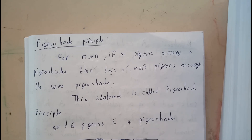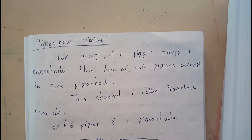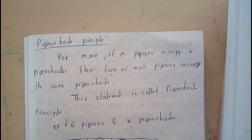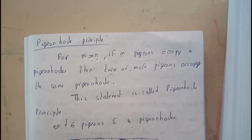With six pigeons and four holes, at least one of the holes is occupied by more than one pigeon. Hence this is called the Pigeon Hole Principle.